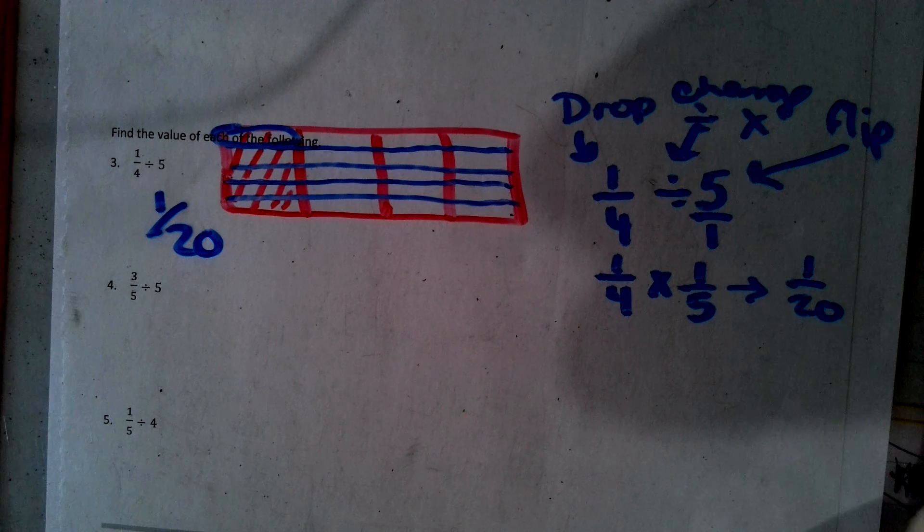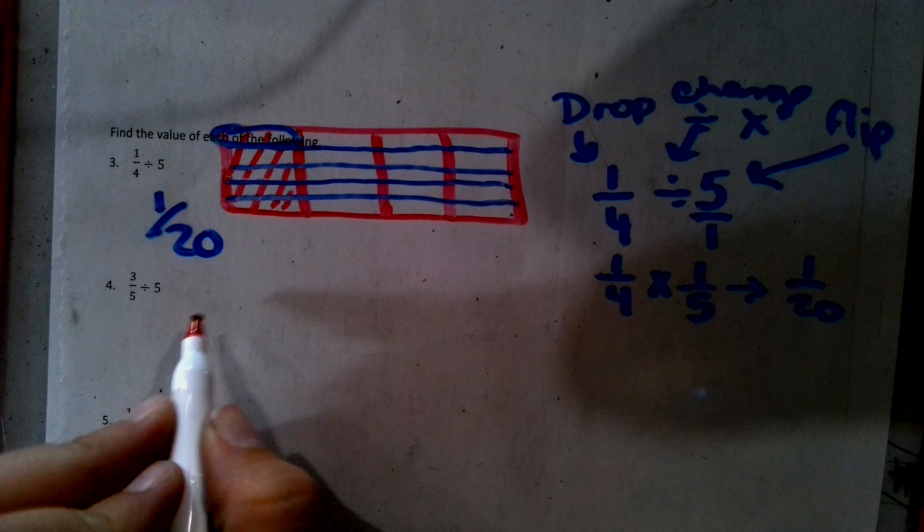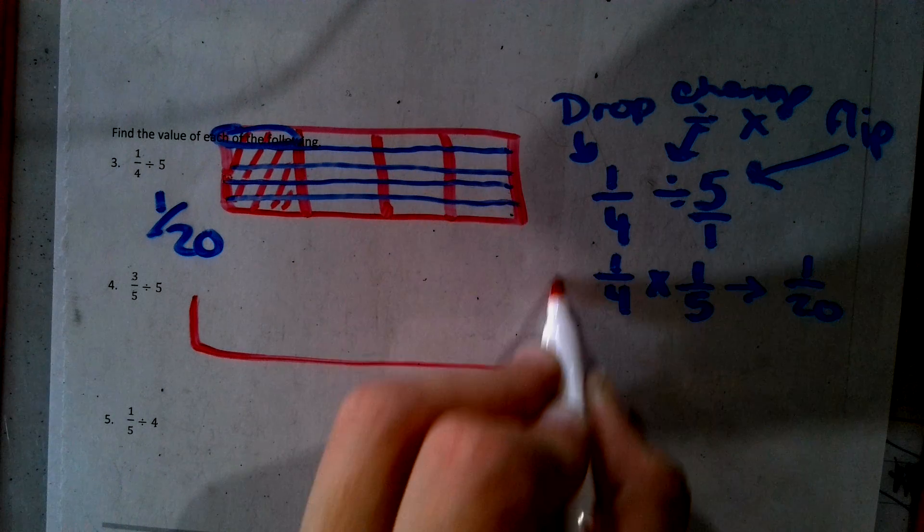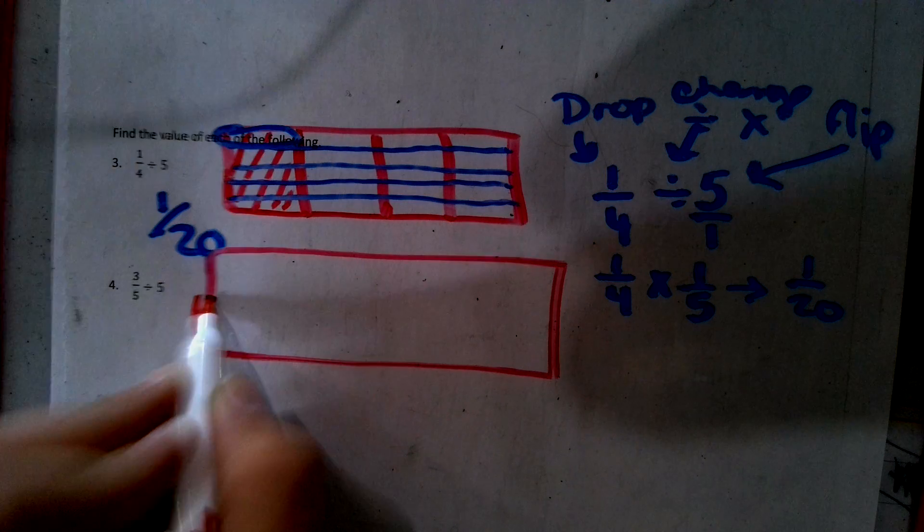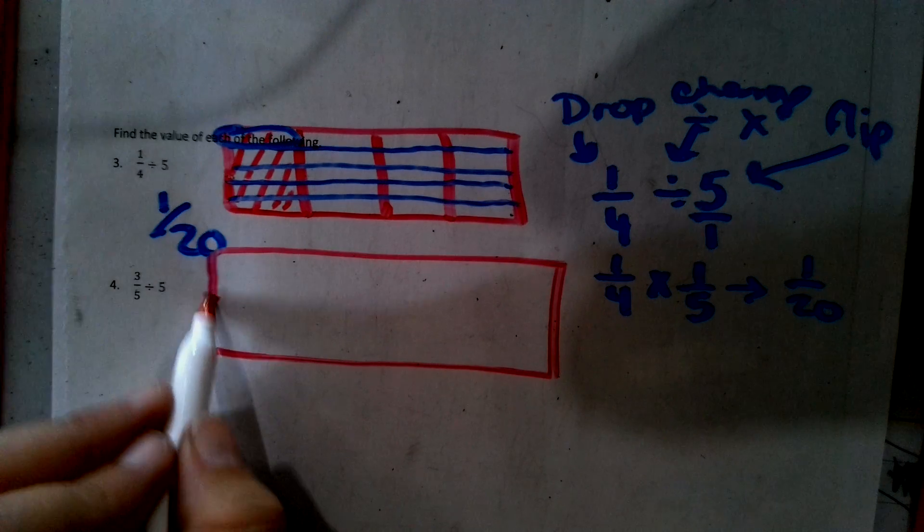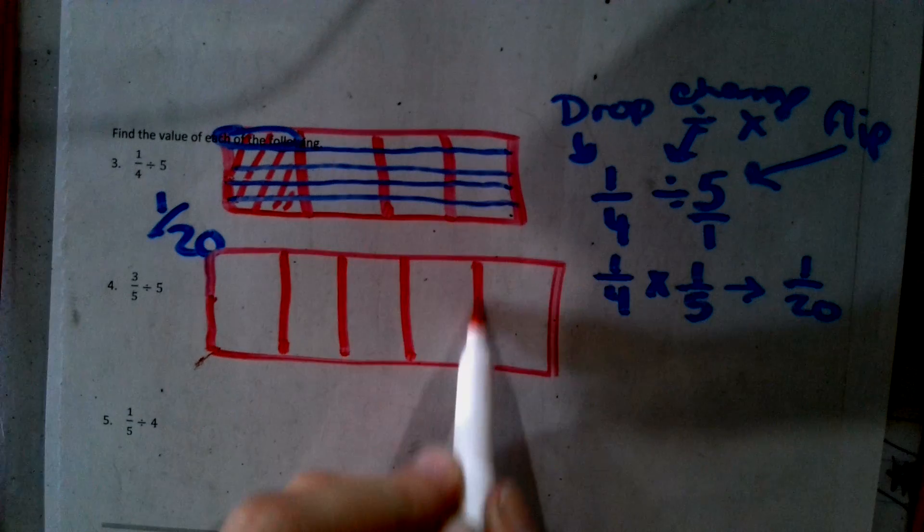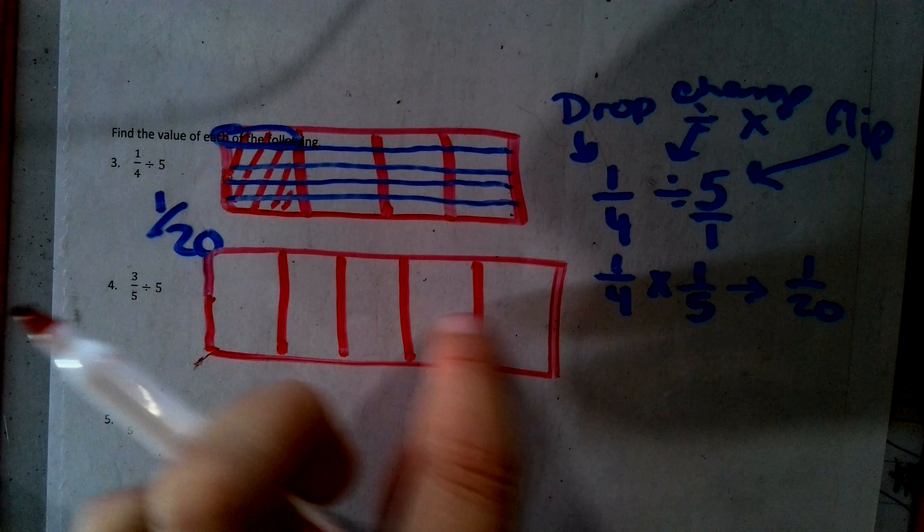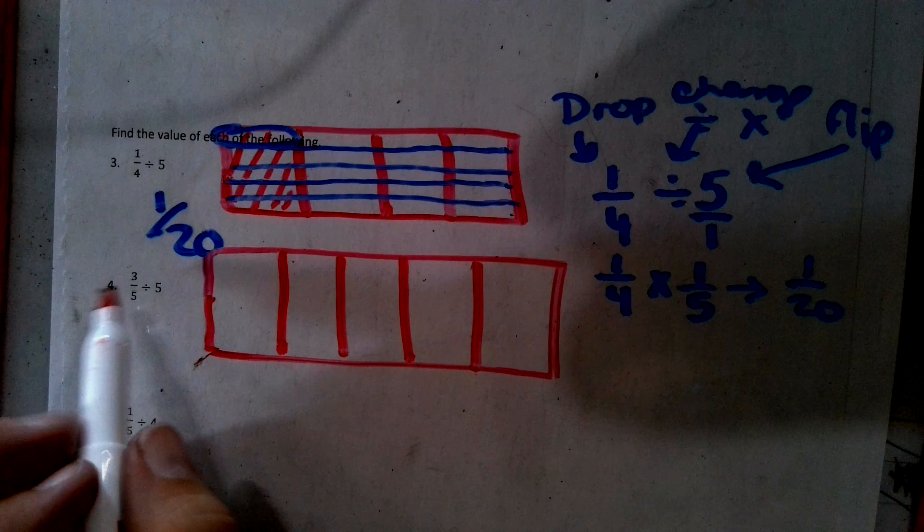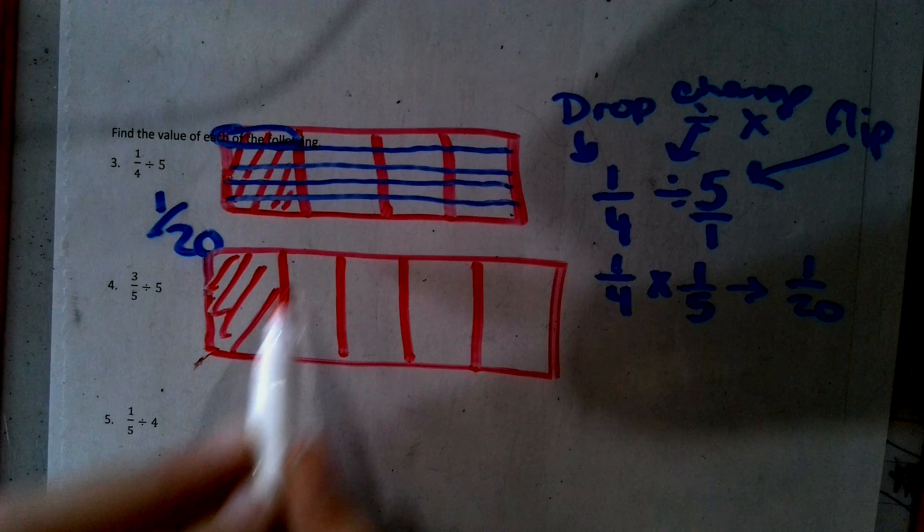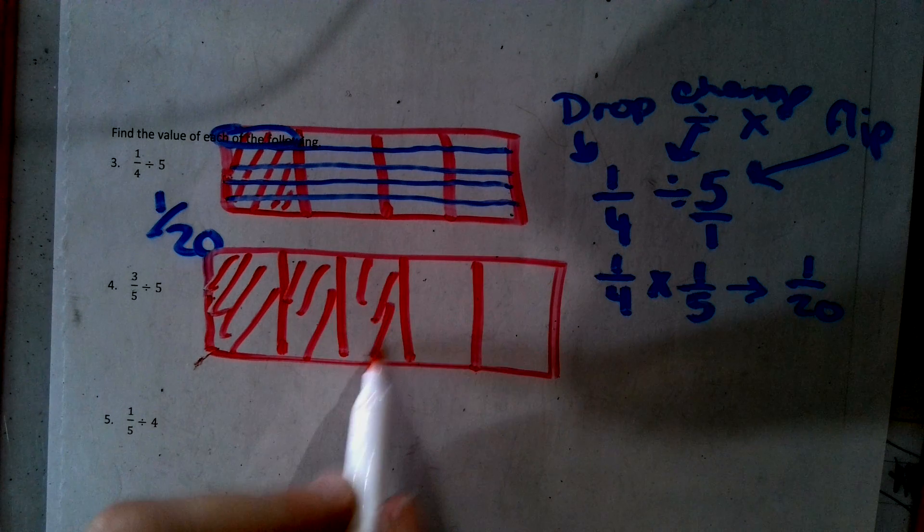So let's try another one. 3/5. So I draw this next shape. If you notice, I like rectangles. It's easier. And I've got to do fifths. So one, two, three, four, five. You try to keep each portion as close as possible. I've got to color in 3/5 of it. So there's one, two, three.